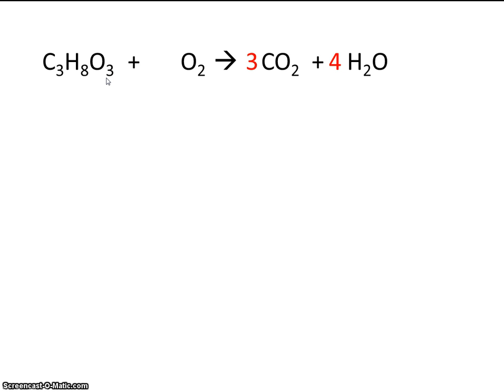And remember, we're trying to get 10 oxygens on the left. So if we already have 3, that means we need 7 more. So here we have 2. So what number times 2 will give us 7, because we need 7 more? That's right, 3.5.